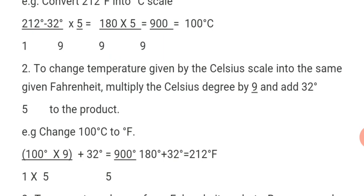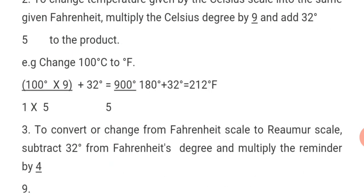For example, change 100 degrees Celsius to degrees Fahrenheit. That is: 100 degrees multiplied by 9 over 5, plus 32. So 100 times 9 gives 900, divided by 5 gives 180. Then 180 plus 32 gives 212 degrees Fahrenheit. That is how 100 degrees Celsius is converted to degrees Fahrenheit.